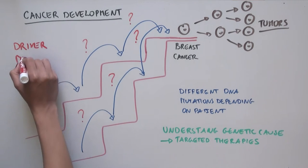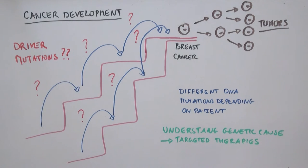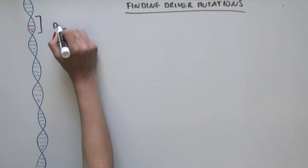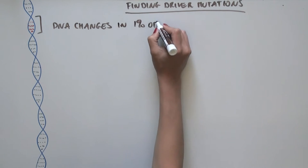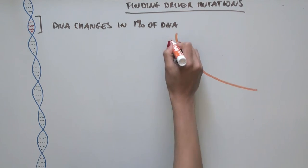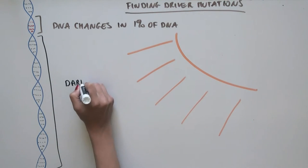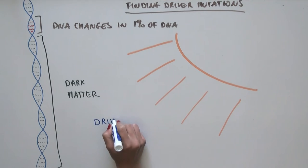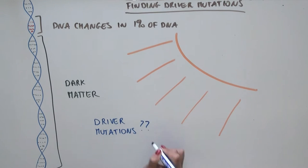In other words, what are the driver mutations? To find these mutations, scientists had previously been looking mostly for DNA changes in the 1% of the DNA sequence that makes proteins. But the scientists of this paper wanted to shed light on this dark matter to see if there were any driver mutations in the rest of the DNA that doesn't make proteins.